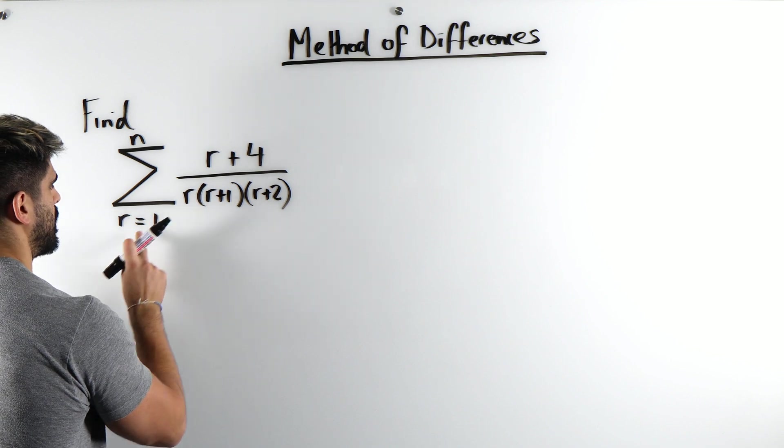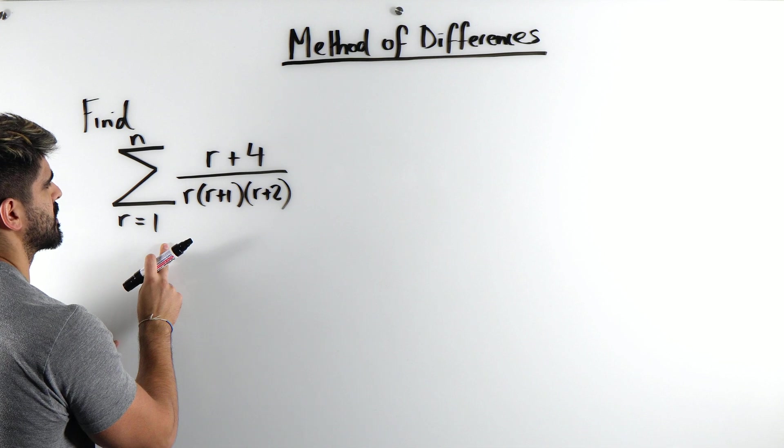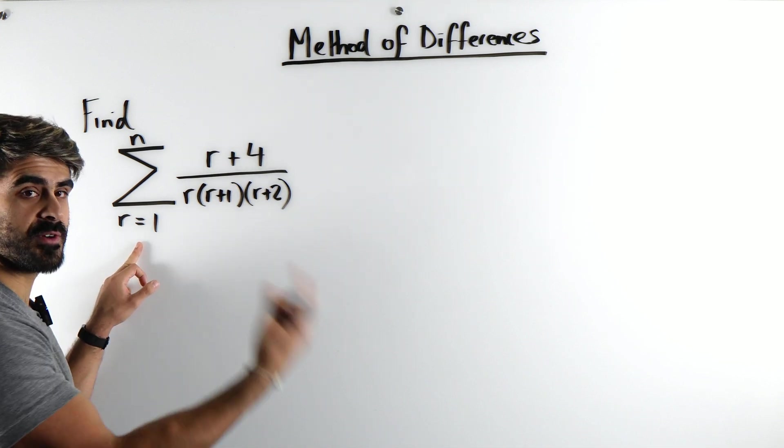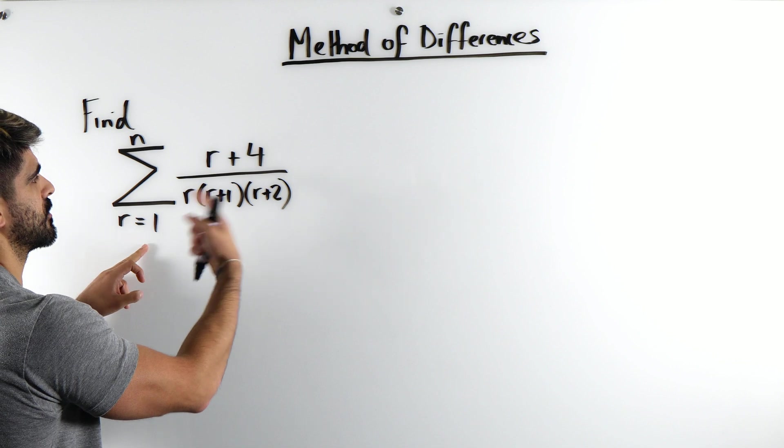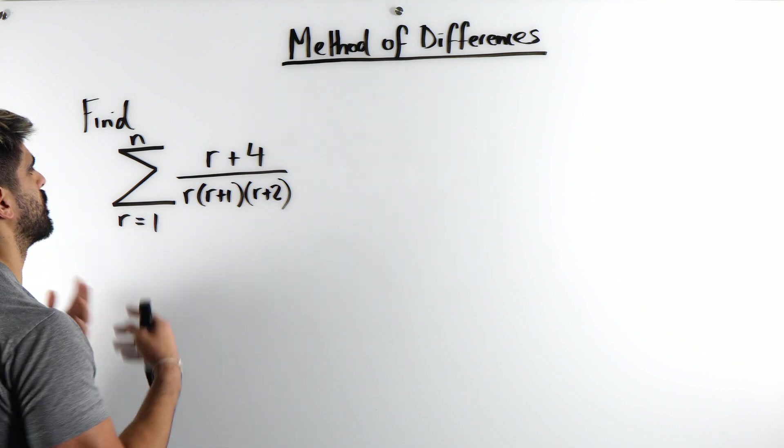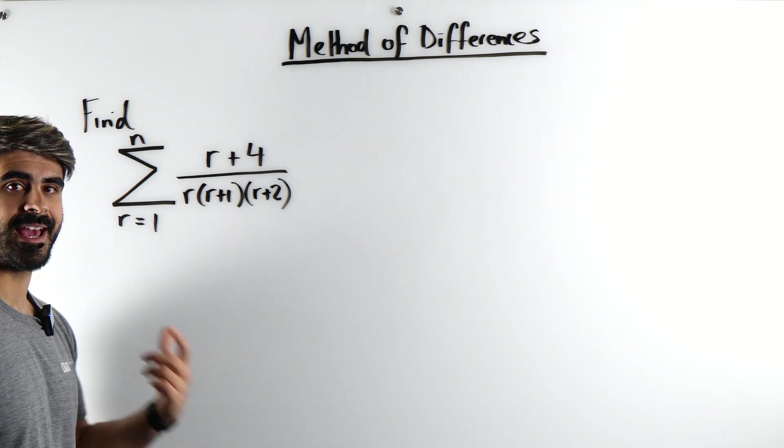So we're taking the sum from r equals 1, so the first term. If you want you could sub in r is 1, that'll tell you the first term. r is 2 will tell you the second term, etc. And we're summing all the way up to the nth term.